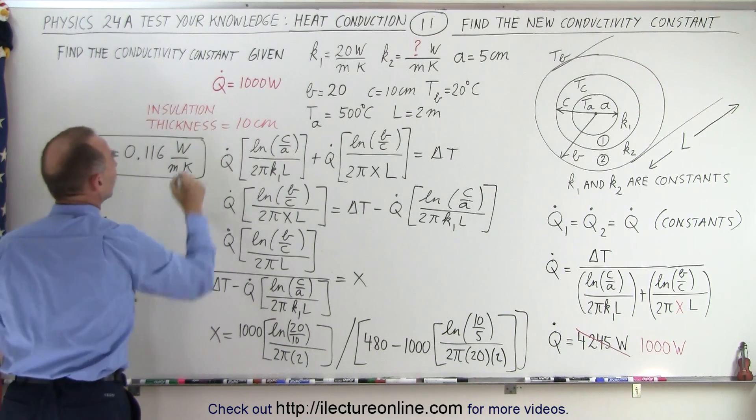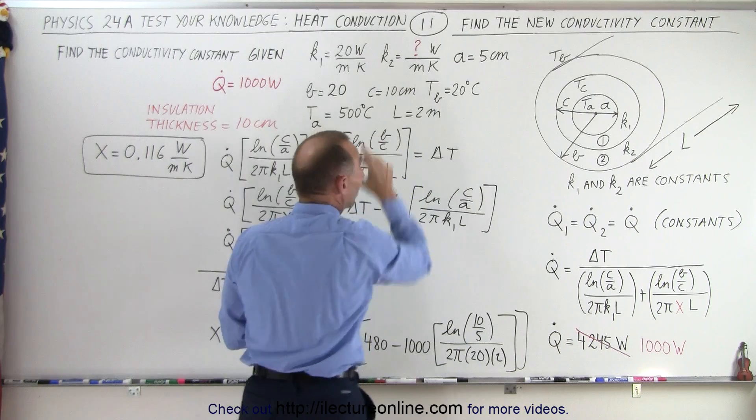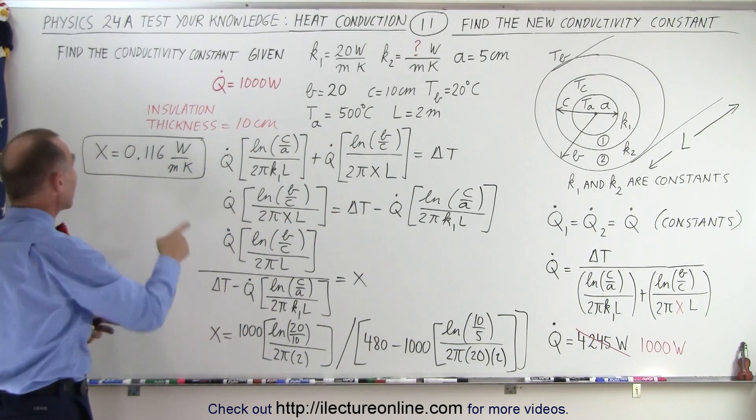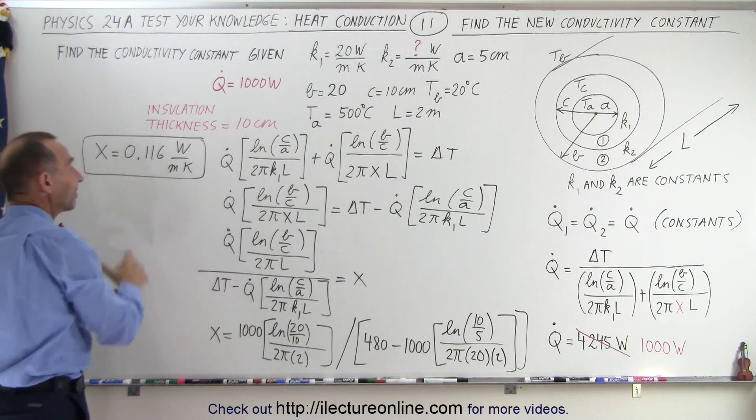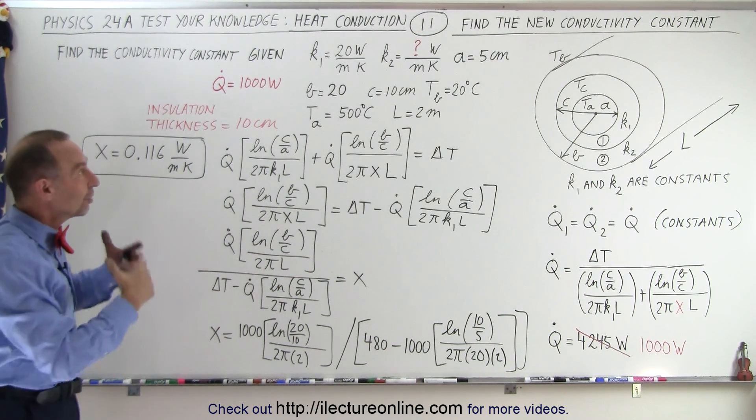So, in other words, instead of having insulation with a conductivity constant that was 0.5 before, because that was the old one, 0.5, we now change it to 0.116, and when we do that, instead of needing that huge amount of insulation, by using a better insulator, by having a heat conductivity constant about one-fifth of what was before,